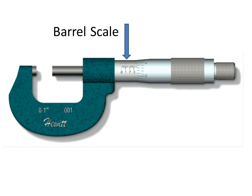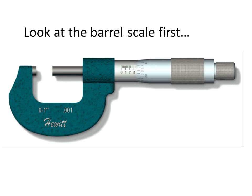There are two scales to look at on a micrometer: the barrel scale and the thimble scale. We'll look at the barrel scale first.